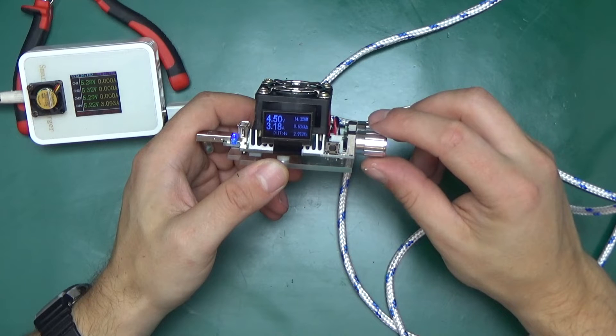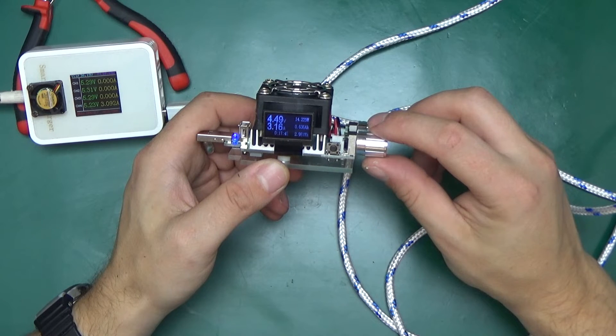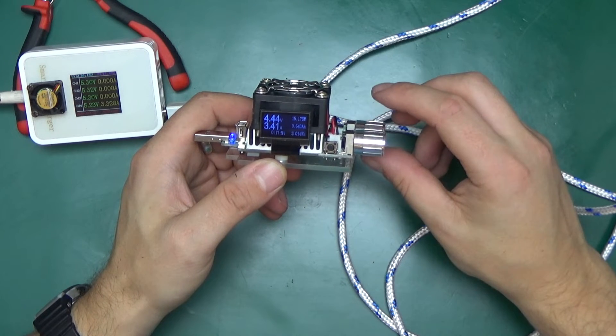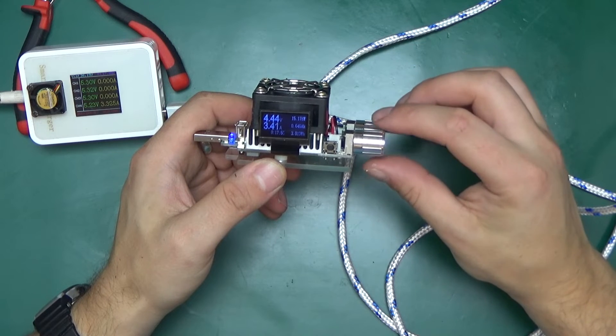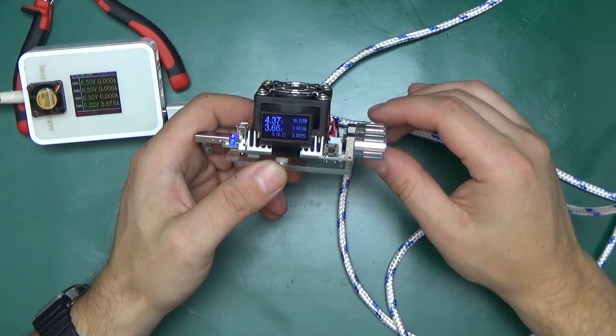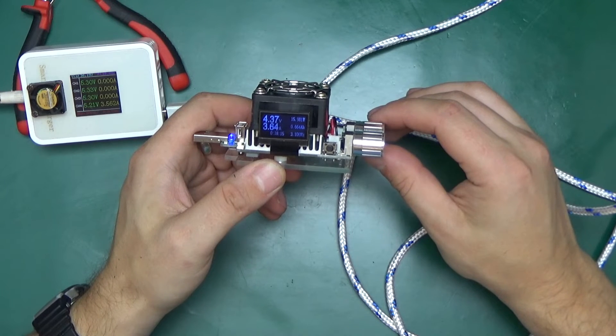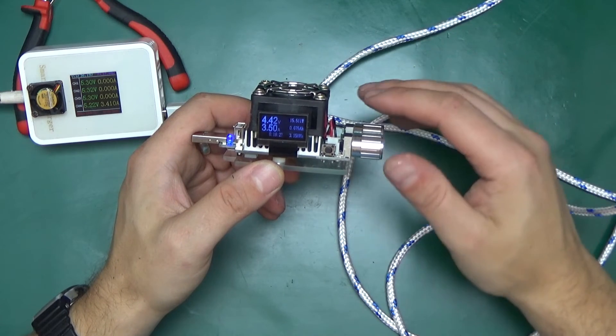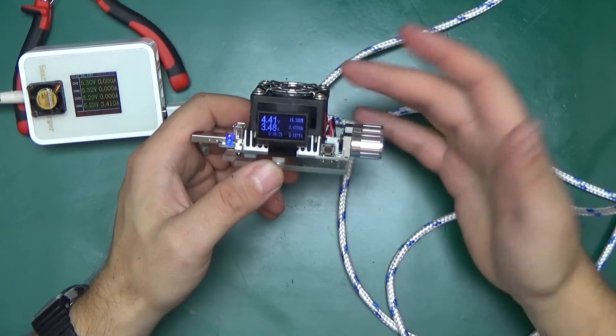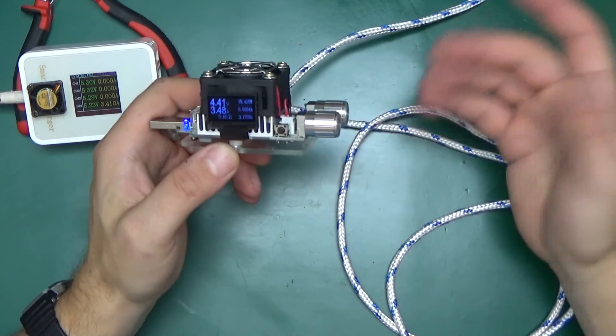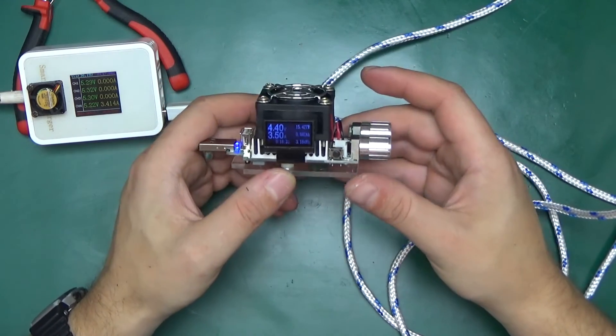Let's see how much current we can draw so we can drop to 4.4 volts. 3.2, 4.5 volts, 3.4 amps, 4.44. Now the fan kicked in, so it took my readings a little bit out. But let's go back down. Let's call that 3.5 amps and we're still within the USB spec of a 2 meter long cable. That's not too bad.